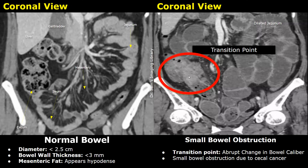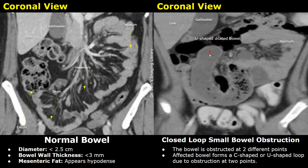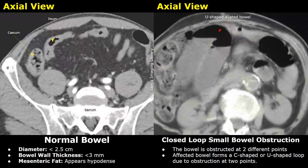A closed loop small bowel obstruction occurs when a bowel loop is obstructed at two different points, and you will see a C-shaped or U-shaped dilated bowel loop. A C-shape or U-shape is due to obstruction at two points.